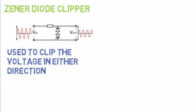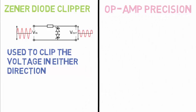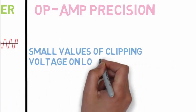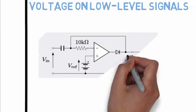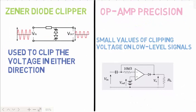When we look at op-amplifier precision clipper, it works by clipping off small values of voltage on low level signals and is useful in many places. This is how an op-amplifier precision circuit looks like. We won't go in details of this circuit in this video. If you want a detailed section of this part, then let me know in the comment section.